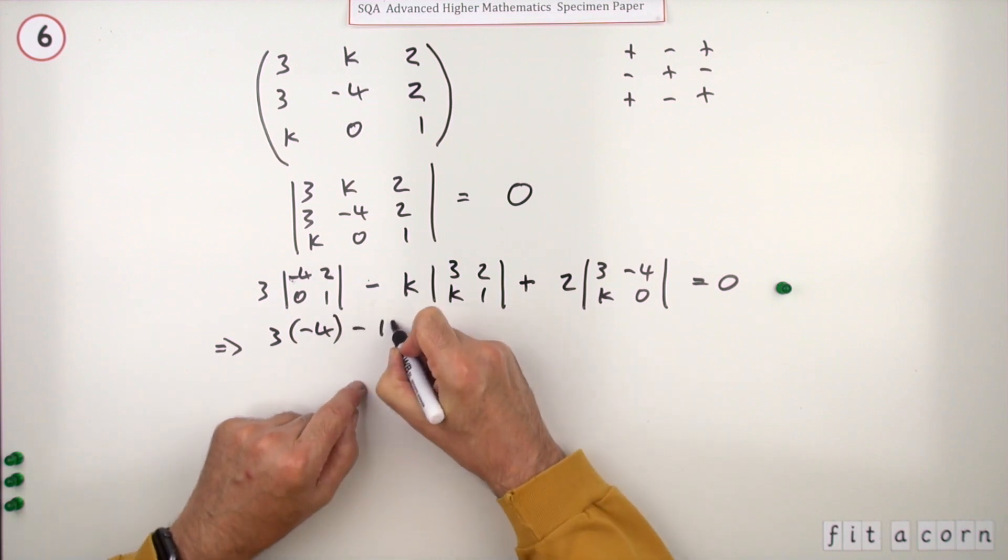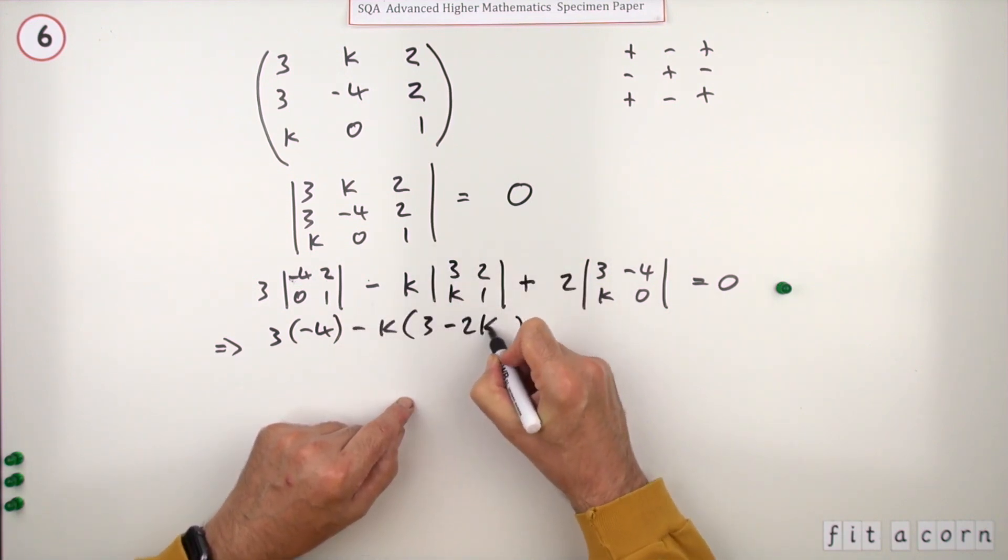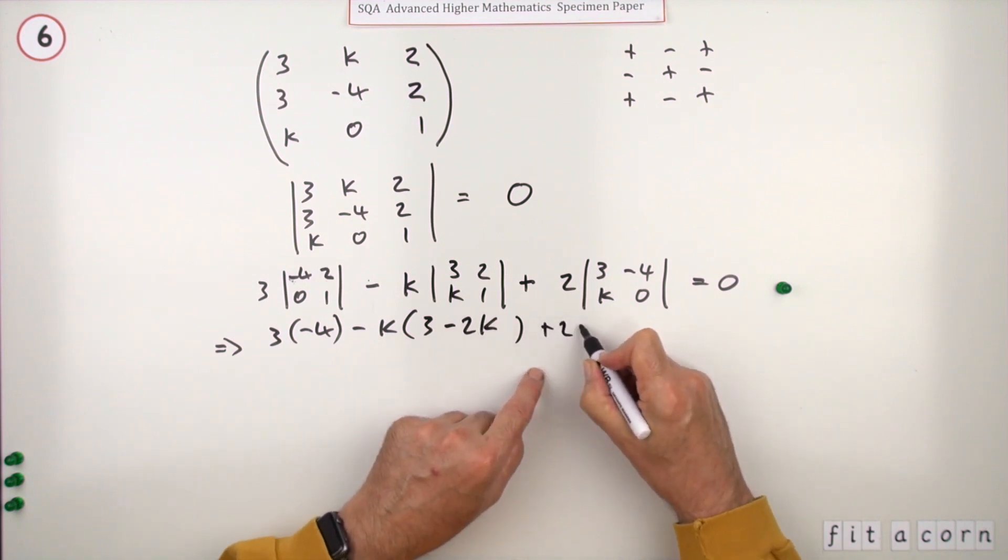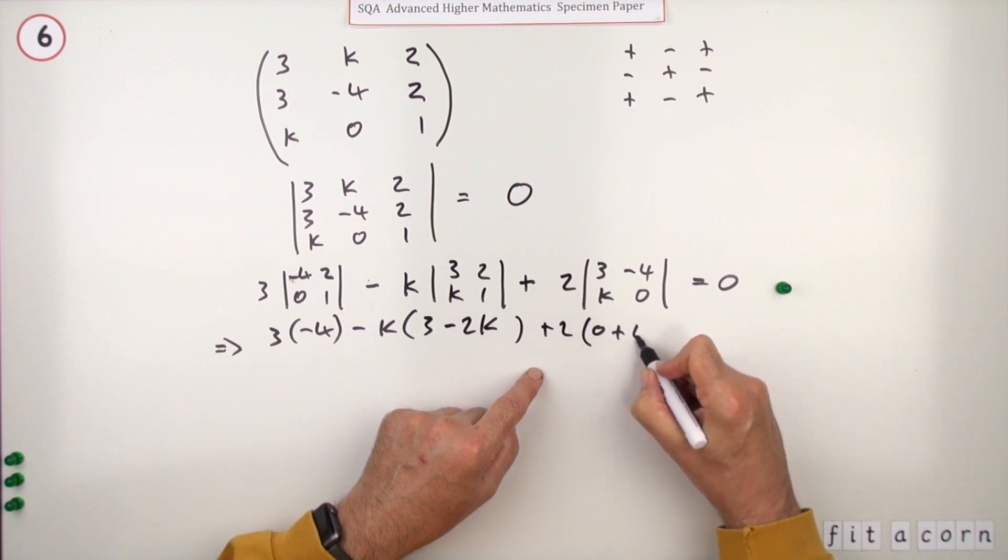And that's minus k times main diagonal 3 take away the other diagonal 2k, this one plus 2 times main diagonal 0 take away the other one, so it'll be plus 4k.